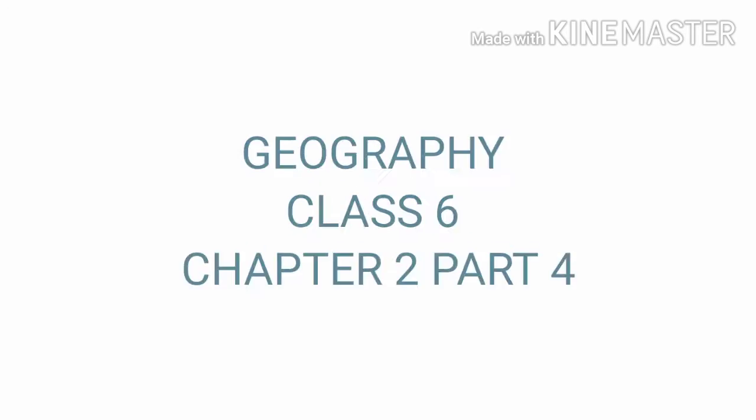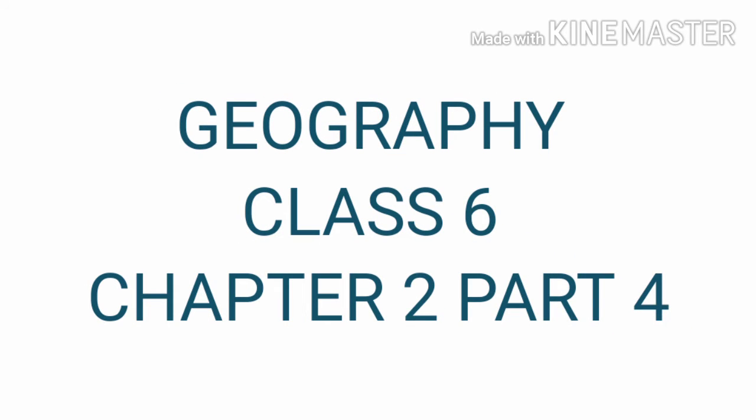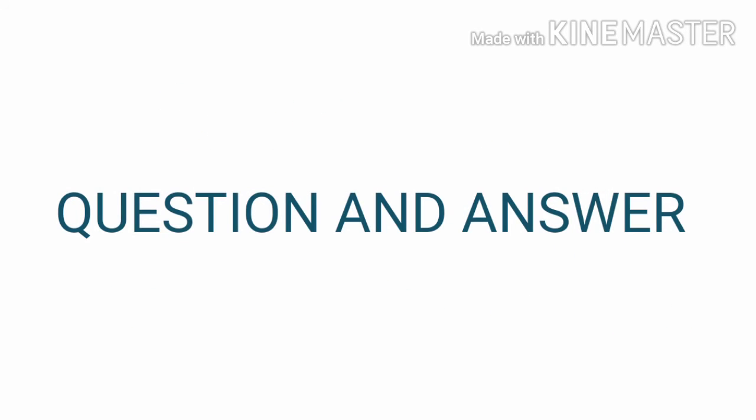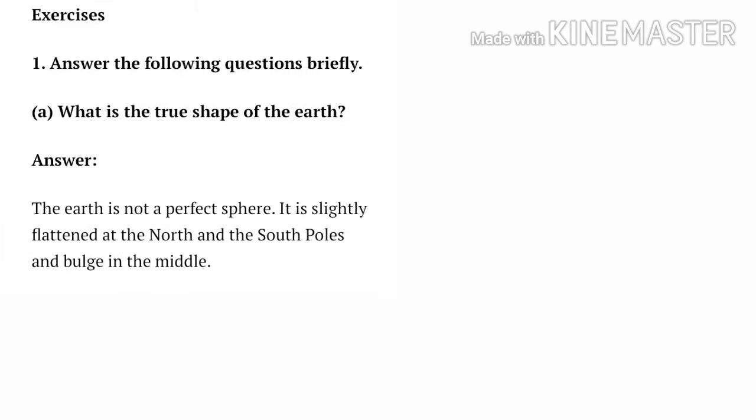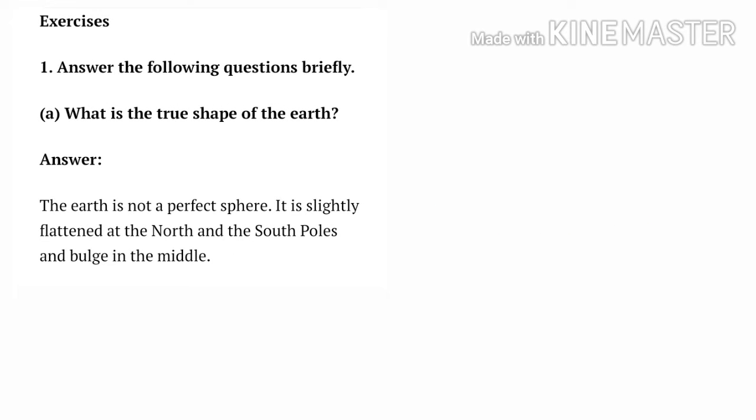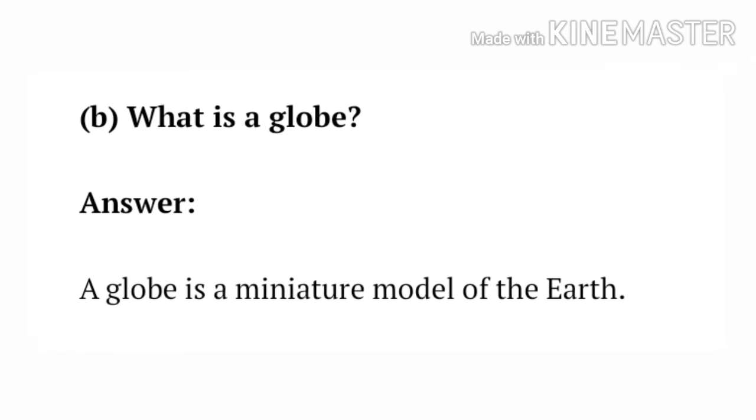Welcome students, this is your geography class, class 6 chapter 2. Today we will discuss questions and answers of this chapter. Question number A: What is the true shape of the earth? Answer: The earth is not a perfect sphere. It is slightly flattened at the north and the south poles and bulges in the middle.